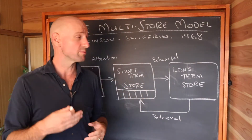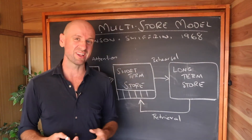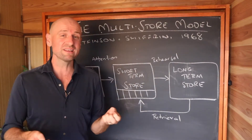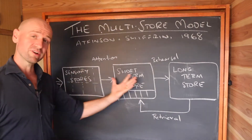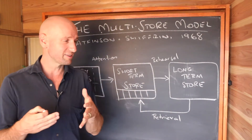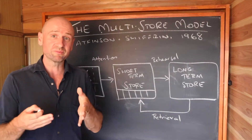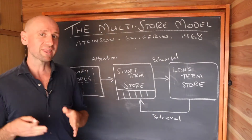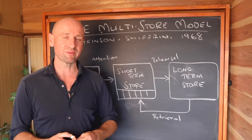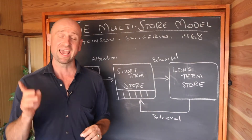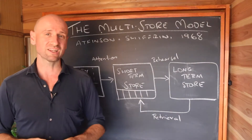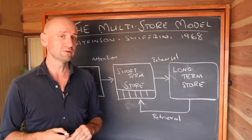Another possible reason you're learning about the multi-store model is because it's quite simple and basic. It's a very straightforward explanation of memory, so it's useful to explain to high school students and beginning college students in psychology. But that's also one of the main critiques — that it oversimplifies some of the memory processes. I'll explain more of those limitations in another video.